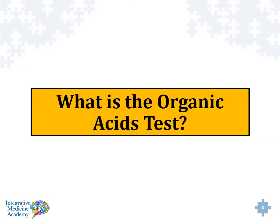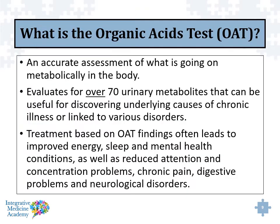So what exactly is the organic acids test? It's an accurate assessment of what's going on metabolically in the body. This test evaluates for over 70 different metabolites that can be useful to discovering underlying states of chronic illness or linked to genetic disorders, nutritional deficiencies, diseases, as well as various toxins — toxins from mold, toxins from bacteria, toxins from yeast. And the treatment implications are significant; it can help people with chronic fatigue, chronic digestive problems, mental health challenges, autism, neurological disorders, and more.